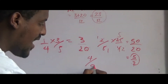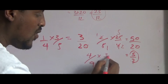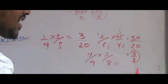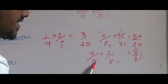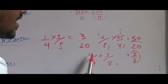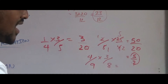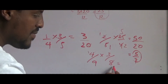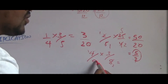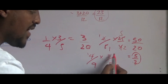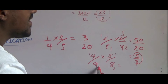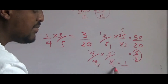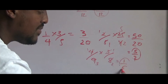4 over 9 times 3 over 8. 4 divided by 4 is 1, 8 divided by 4 is 2, 3 divided by 3 is 1, 9 divided by 3 is 3. So 1 times 1 is 1, and 3 times 2 is 6 — giving us 1 over 6 through simplification.